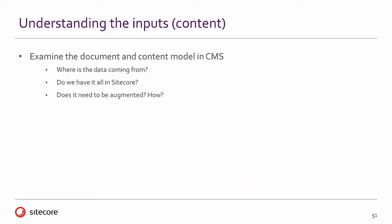Next, we're going to look at the content model in the CMS itself. We want to make sure we have all the data the page is expecting — all the fields — and we'll look at the information architecture. Do we have nice hierarchies we can iterate through, or do we need search and metadata to select content? Is all this information in Sitecore, or does it come from PIM systems or SQL server, requiring custom queries and renderers? We'll look at changes needed to accommodate the design more successfully.